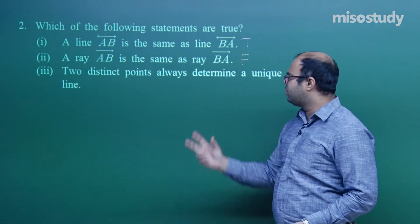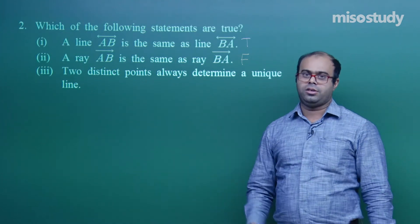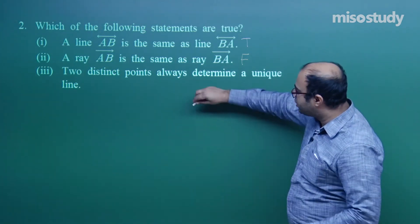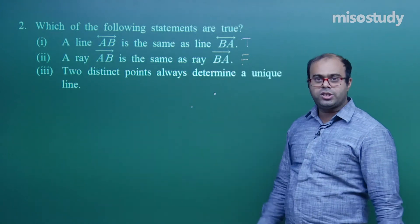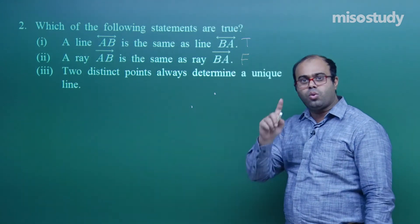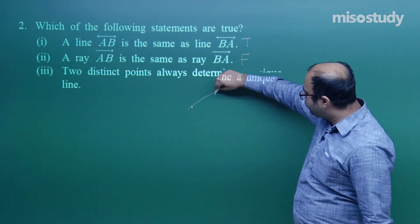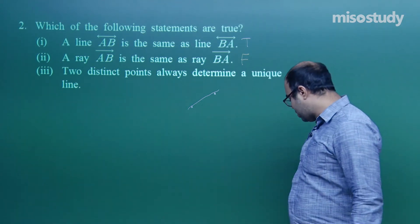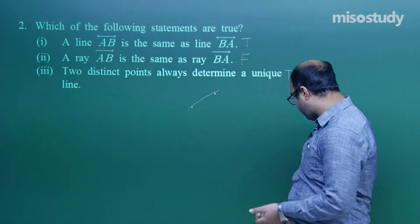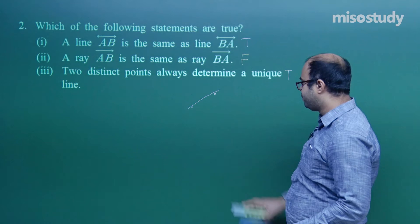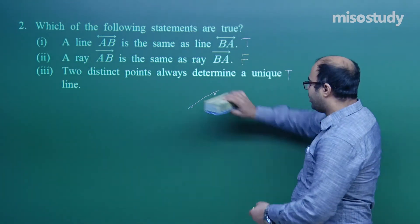Third statement: two distinct points always determine a unique line. Yes — if we take two distinct points, there is only one unique line which passes through both of them. This is something we studied in this chapter, so this statement is of course true.